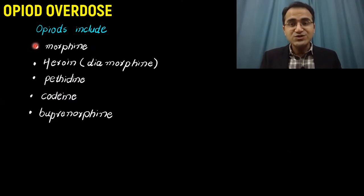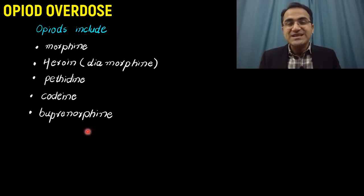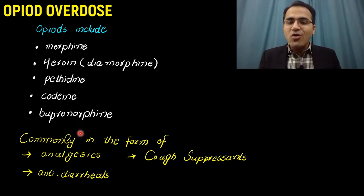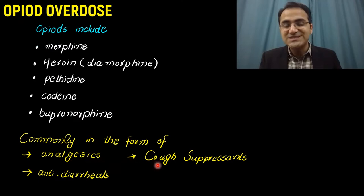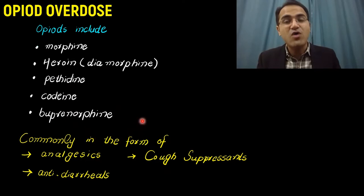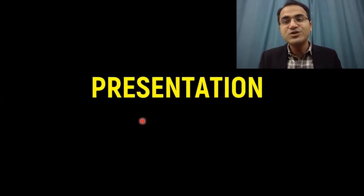Opiates include compounds like morphine, heroin (which is diamorphine), pethidine, codeine, and buprenorphine. These compounds cause CNS depression and are commonly found in the form of analgesics, painkillers, cough suppressants, and antidiarrheals. They are also used as a drug of abuse, like heroin.